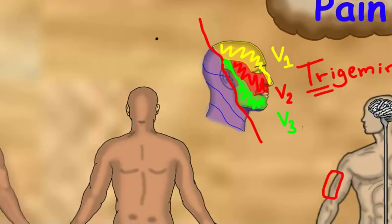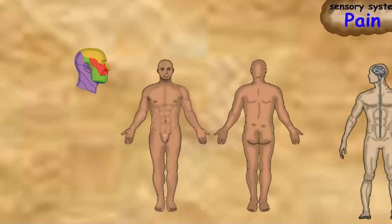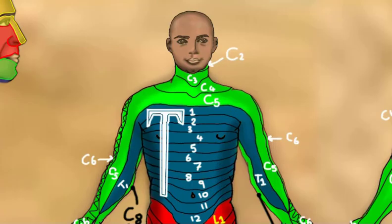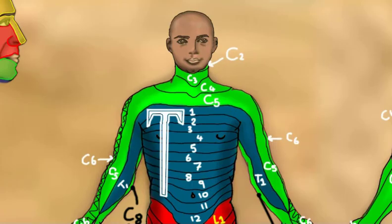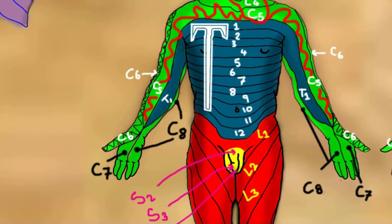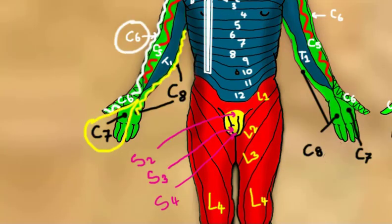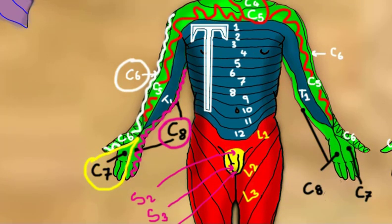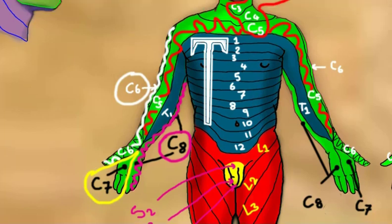The back of the head is supplied by the cervical nerves from C2 to C4. In the anterior view of the body, the neck, upper chest, shoulders, arms, and hands are supplied by the cervical nerves from C2 to C8. The chest and abdominal area are supplied by the thoracic spinal nerves from T1 to T12.